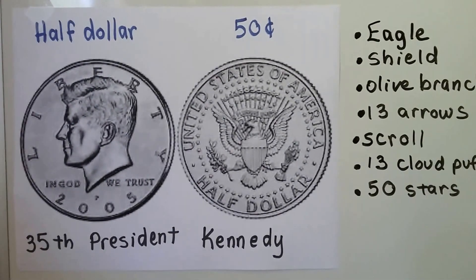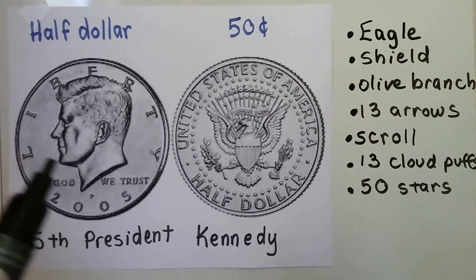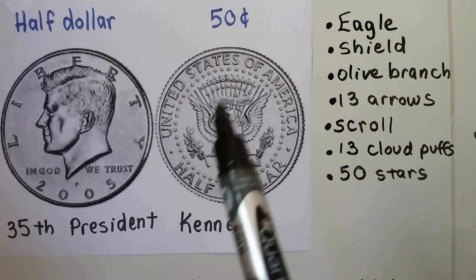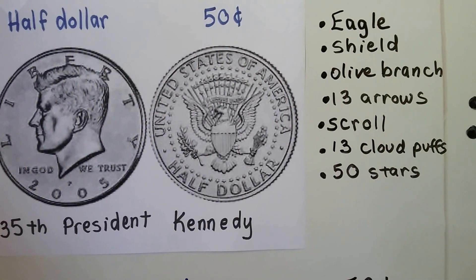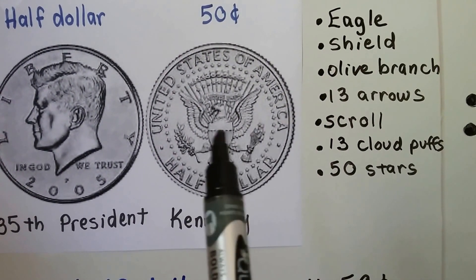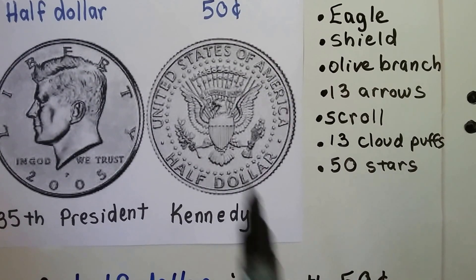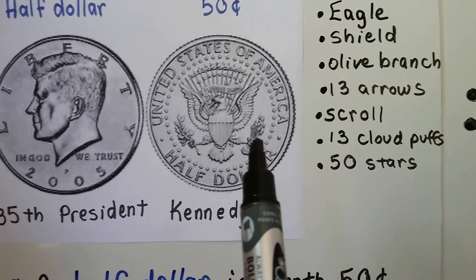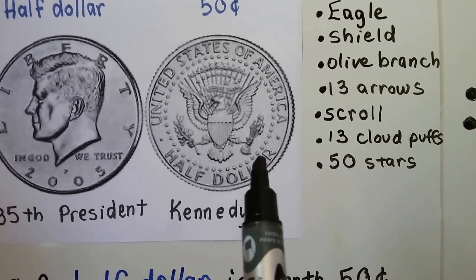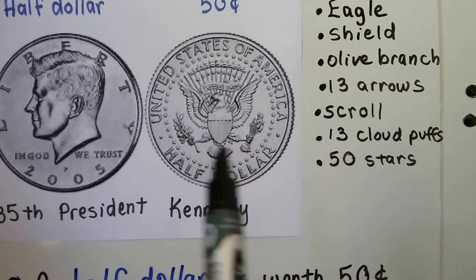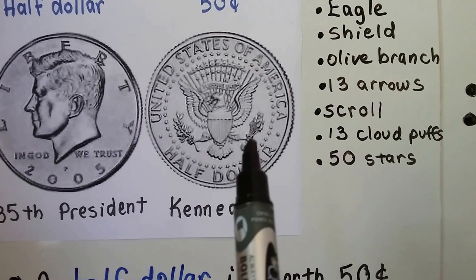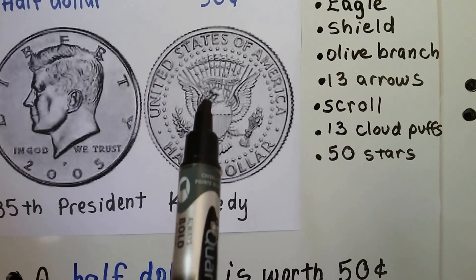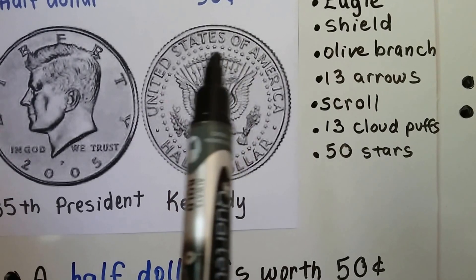On the front is a picture of the 35th president, Kennedy. On the back there's a lot: there's an eagle and he has a shield on his chest, he's holding an olive branch and 13 arrows in each of his claws — see his talons — and there's a scroll in his mouth and 13 cloud puffs above his head.